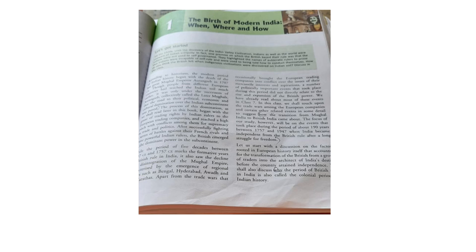The Europeans first entered India for foreign trade purposes only. Slowly they reached the peak in trade and entered into politics as well. Among the European countries they were fighting each other — who is powerful, who would occupy entire India. Among the Europeans, France and Britain were the most powerful, trying for supremacy to establish their own empire in India. Finally, the British emerged as the dominant power in the subcontinent.